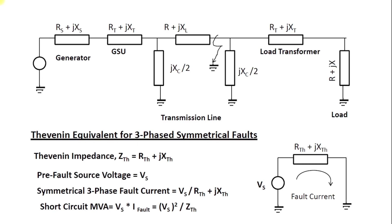When we talk about a balanced short circuit, all three quantities behave the same. It means that all three phases are going to be shorted out at the same time — the voltage, current, and impedance of all three phases are impacted simultaneously. This means that the normal single-line diagram method of calculation can still be implemented.